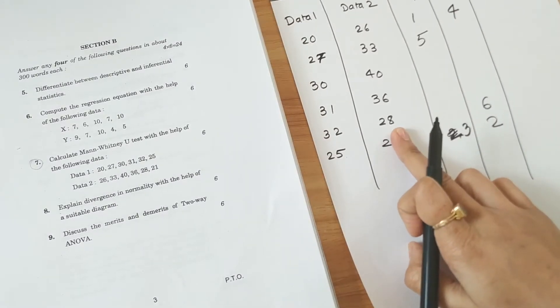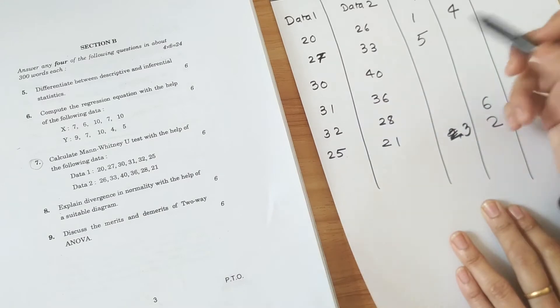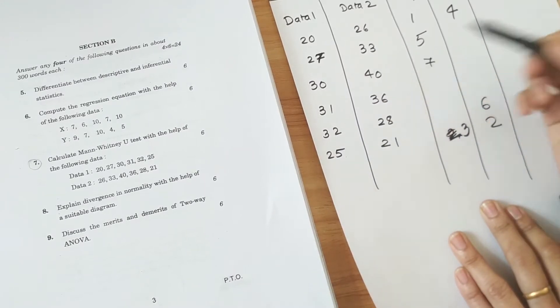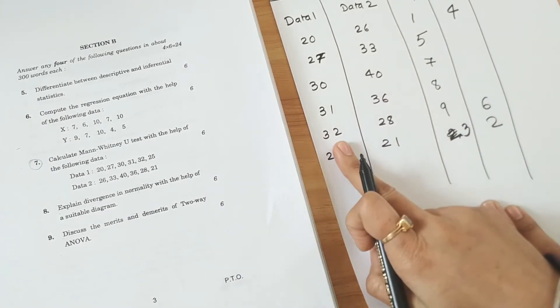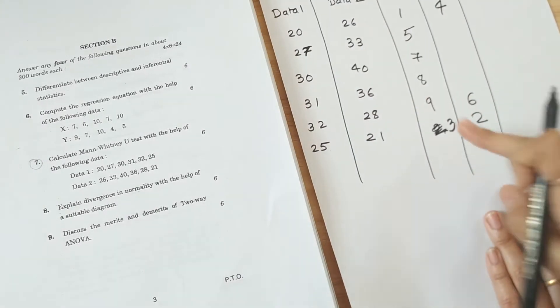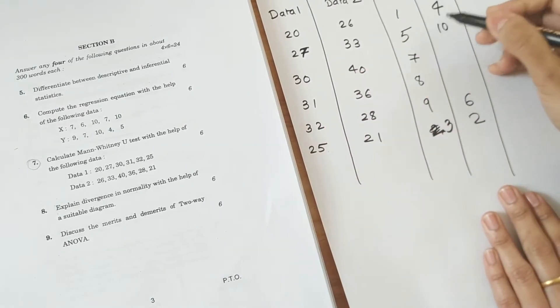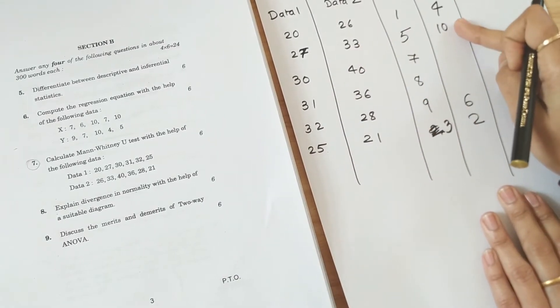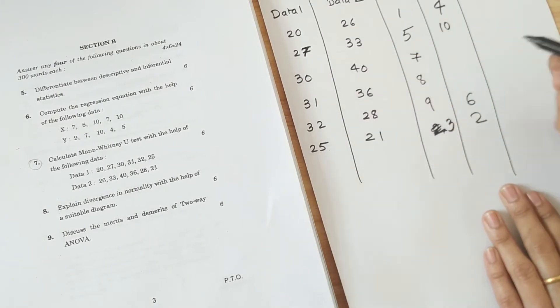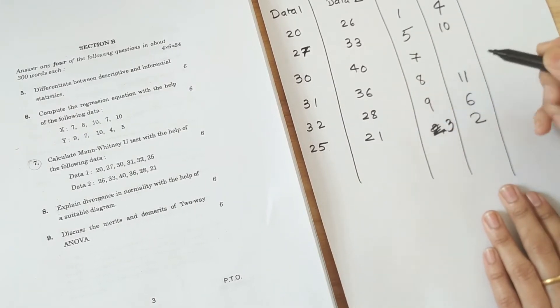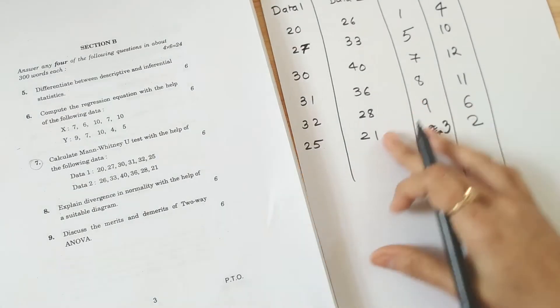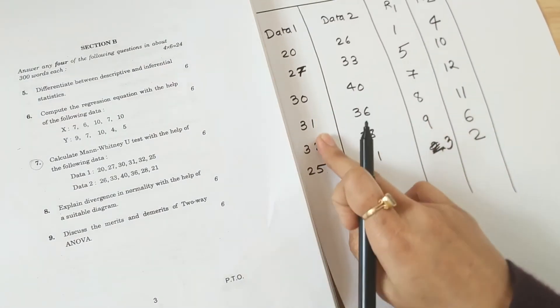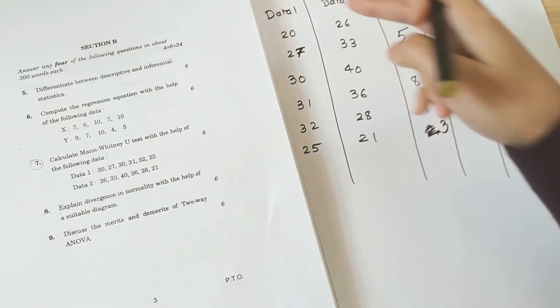Now after 28 is 30. So 7 goes here. 31 again 8 in the same column. And 9 in the same column. Now after 32 is 33, so 10 goes here. After 33 is 36, so 11 goes here. And last is 40, so 12 goes here. So the ranking is considering both the group of elements combined.